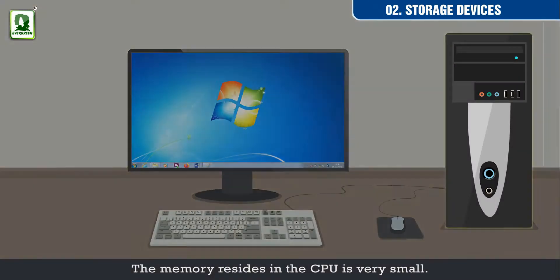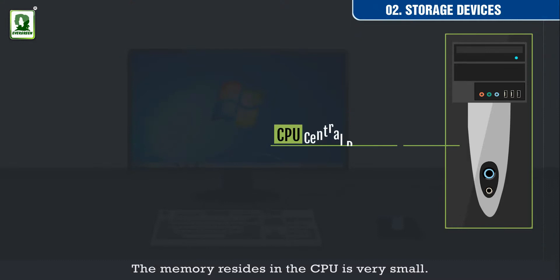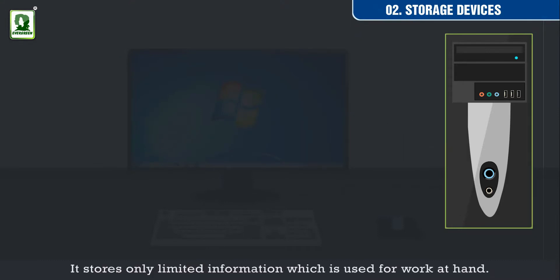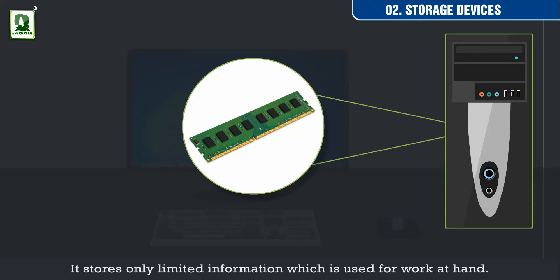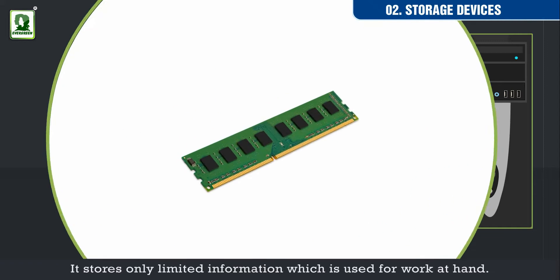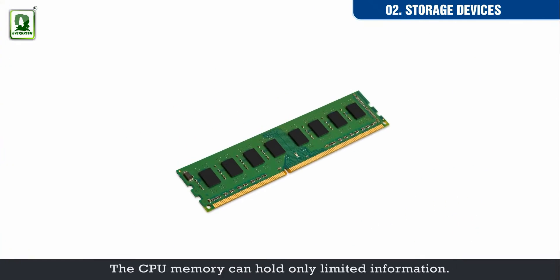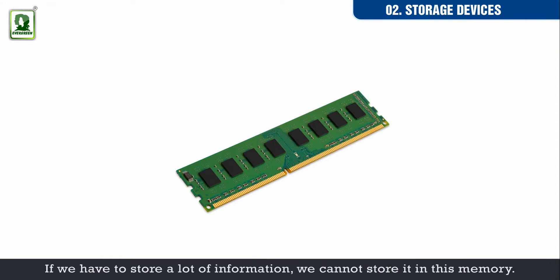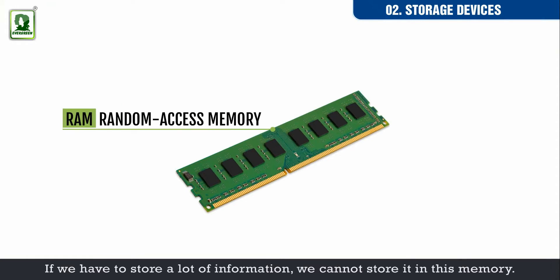The memory that resides in the CPU is very small. It stores only limited information, which is used for the work at hand. The CPU memory can hold only limited information. If we have to store a lot of information, we cannot store it in this memory.